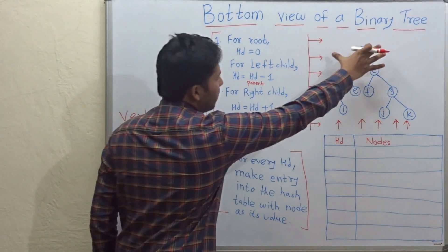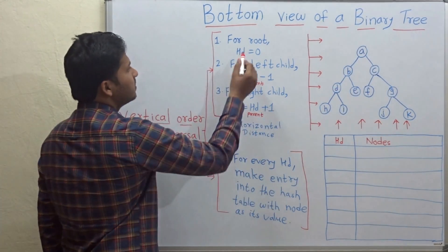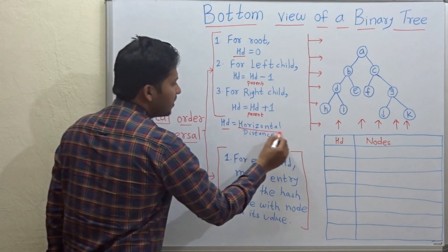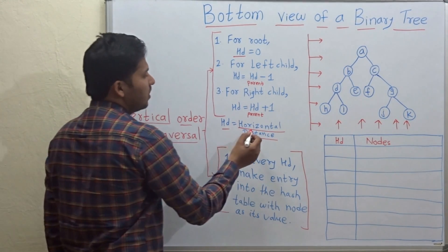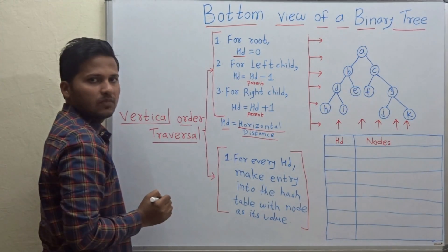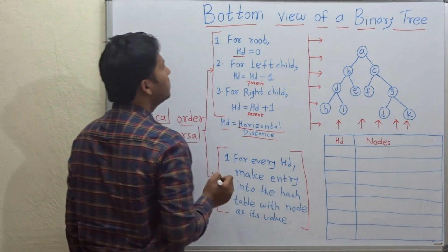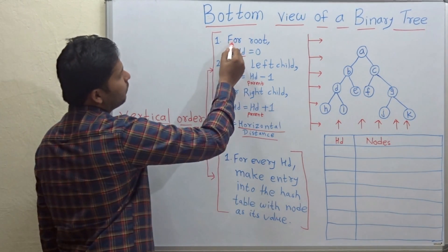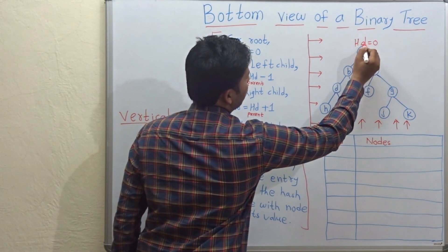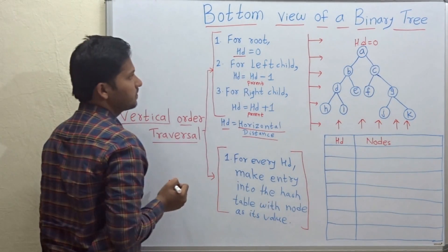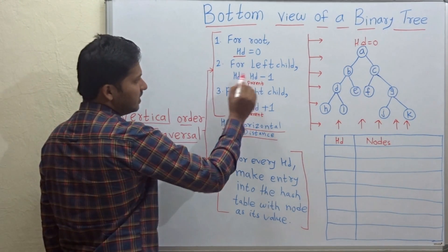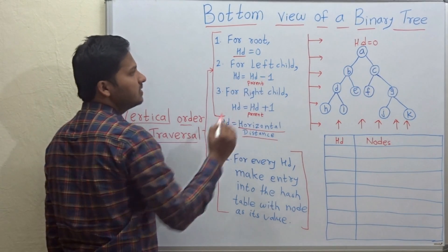For vertical order traversal we are going to use the distance hd, which is denoted as horizontal distance. This horizontal distance is calculated for every node in the binary tree. The rules are: for the root, hd is equal to 0. For the left child, hd is equal to hd of parent minus 1.